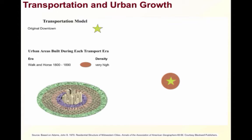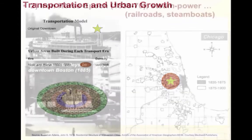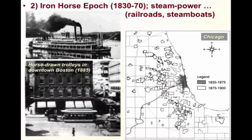Then there was the Iron Horse Epoch between 1830 and 1870, characterized by the impact of improved steam engine technology by James Watt. Cities expanded along with the development of steamboats and regional railroad networks. You can even see this horse-drawn trolley in downtown Boston.